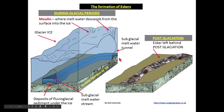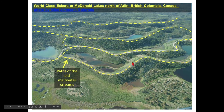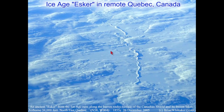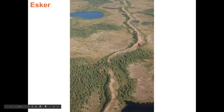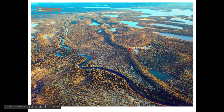Here's another view of how eskers form: a tunnel under the ice, alluvium transported and deposited under the ice, then when the ice melts, the perched stream bed is revealed as an esker. Here we have multiple eskers on a snowy continentally-glaciated landscape — you can see the stream that would have been flowing under the glacier.